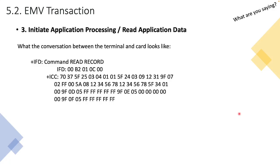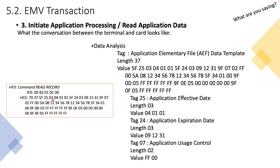Once the terminal has received the AFL, it's now ready to start issuing READ RECORD commands to actually retrieve that information. The terminal issues a READ RECORD command and the ICC — the chip — responds. Looking at what the chip responded with, you can see some of the tags we spoke about. For example, tag 5F25 has a length of 03 and a value of 04 01 01. Looking at the application expiration date, tag 5F24, the length is 03 and the value is 09 12 31 — meaning December 31st, 2009.